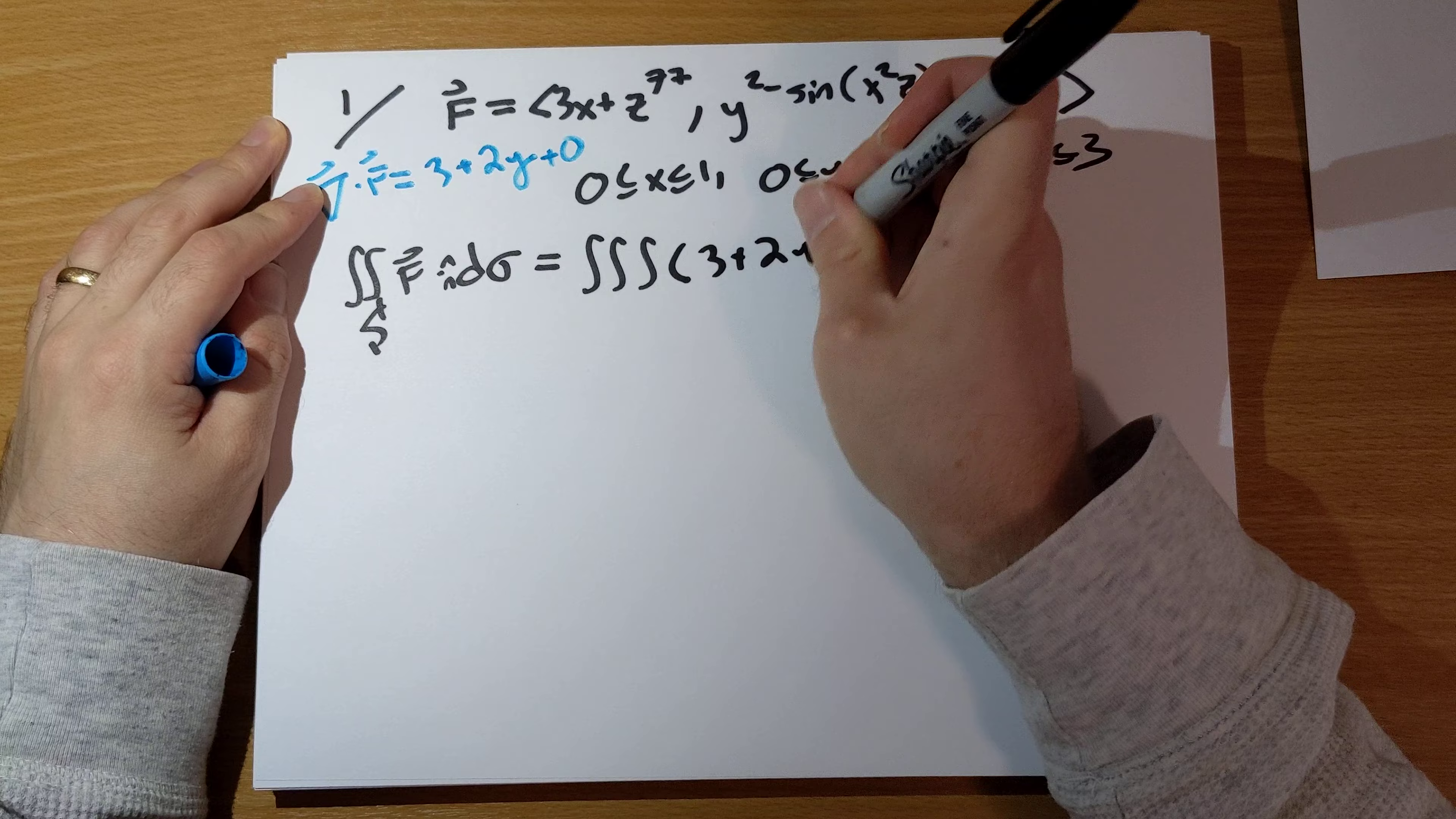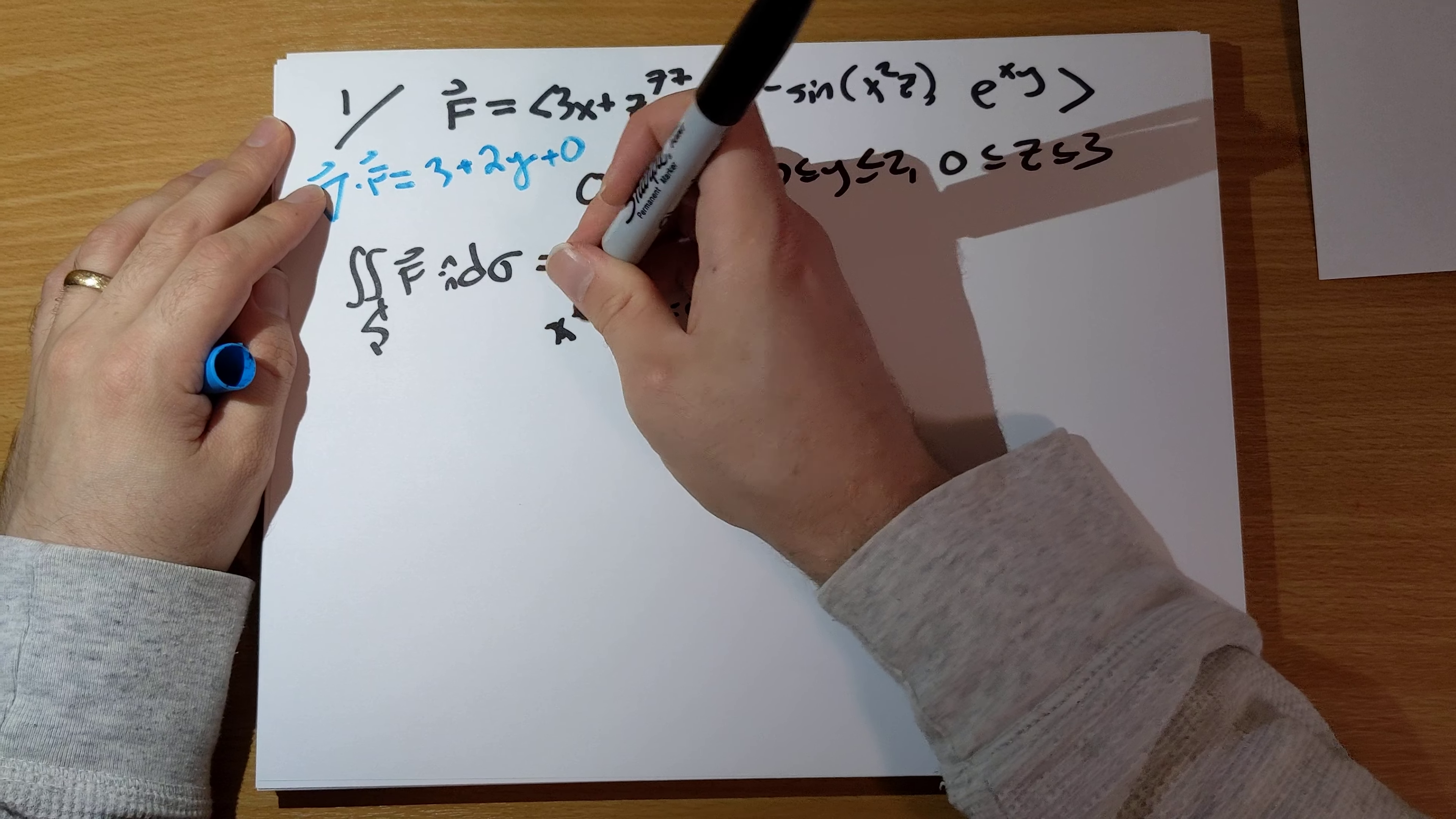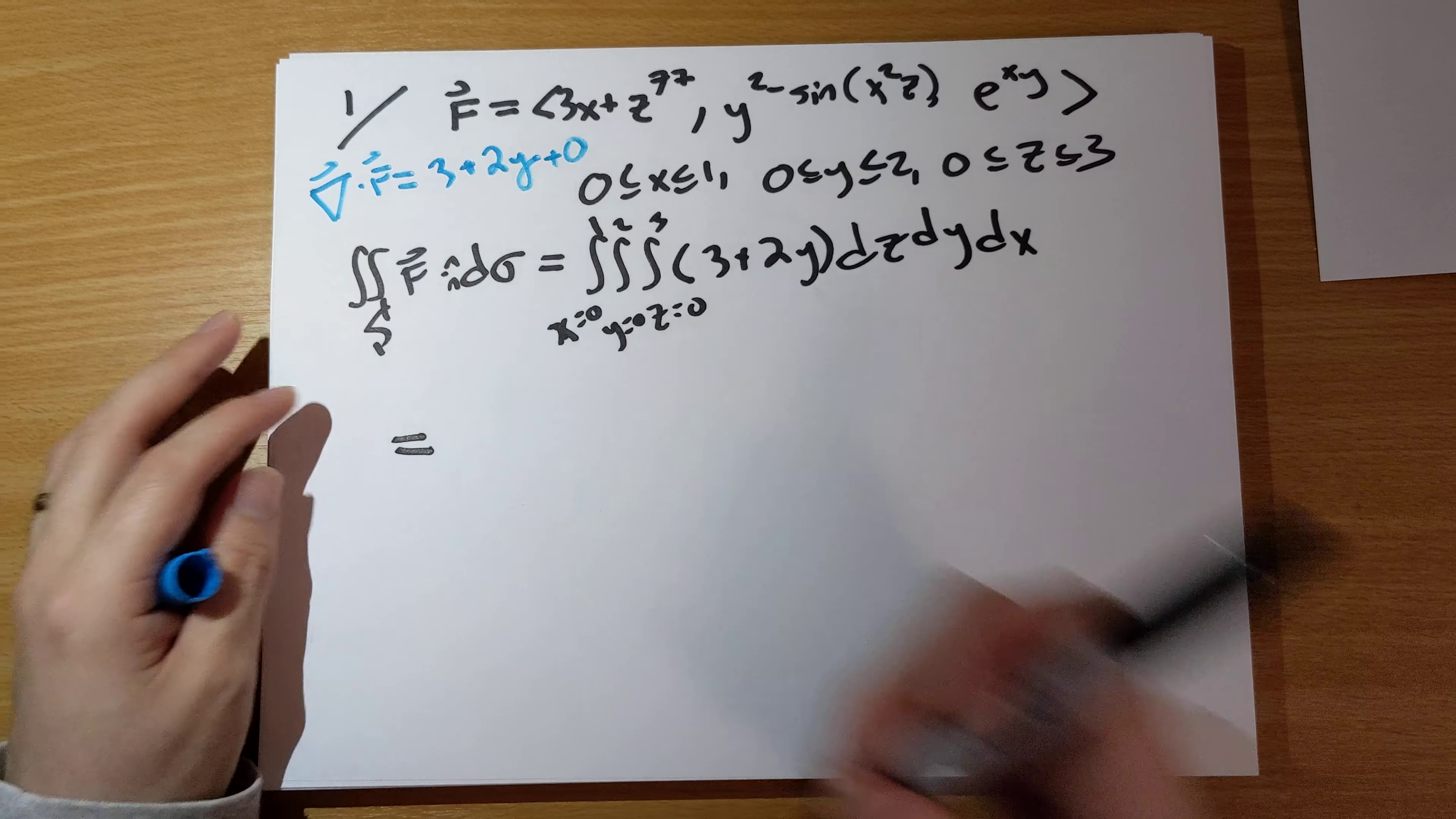And so, all we have to do is integrate z from 0 to 3, y from 0 to 2, x from 0 to 1, 3 plus 2y, dz, dy, dx.